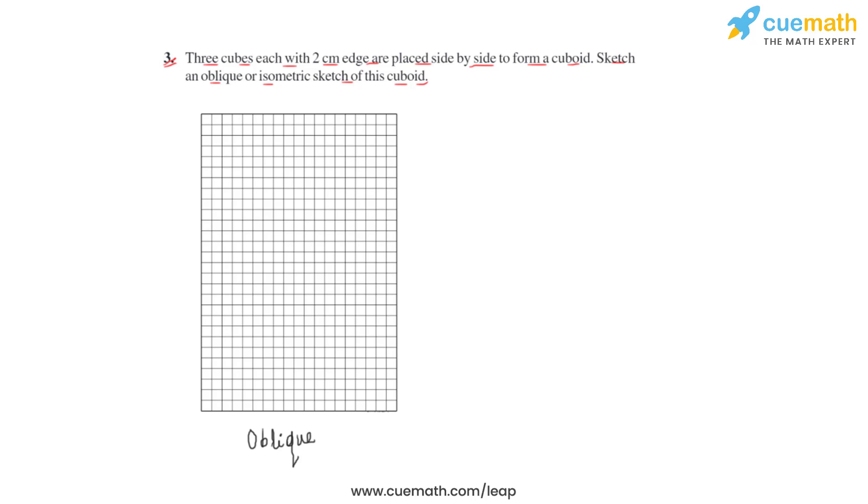Let us first see an oblique sheet of paper and how the three cubes placed side by side to form a cuboid are represented. On this oblique sheet of paper, we see that the dimension of the edges of these three cubes is two.